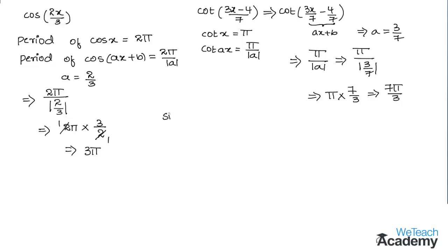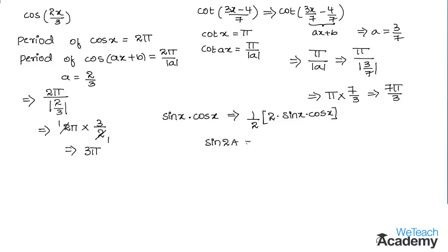Now we have to find the period of sin x multiplied by cos x. We can write this function in the form of (1/2) × 2 sin x cos x. Here, 2 sin x cos x is in the form of sin(2a) = 2 sin a cos a, so using this formula we can write it as (1/2) sin(2x).